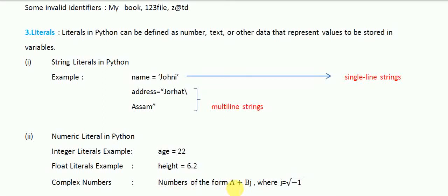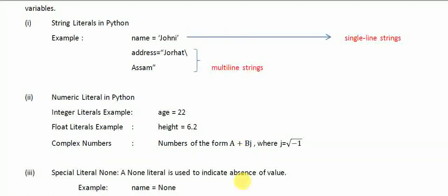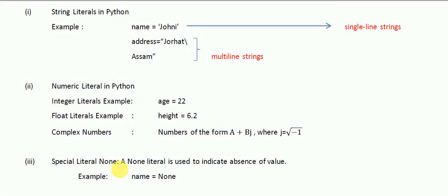Next is complex numbers. Complex numbers are of the form a + bj, where j equals the square root of minus 1. You will get to know more about this in class 11. In a complex number, 'a' is an integer, 'b' is a real coefficient, and 'j' represents the square root of minus 1.